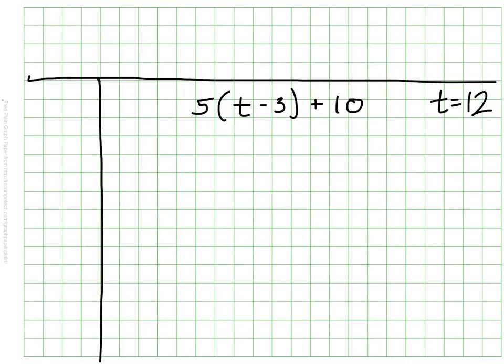I'm going to go ahead and write in 12 where my t would be. So, we have 5, still with the parentheses, 12 minus 3 plus 10. So, now that's our actual expression that we're going to solve. And we need to make sure we use our order of operations. I'm just going to write this on the side so we don't forget.